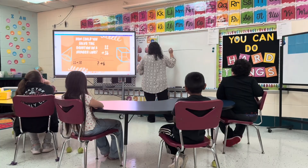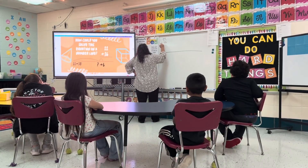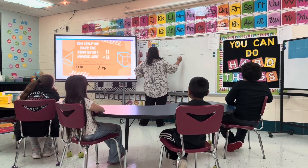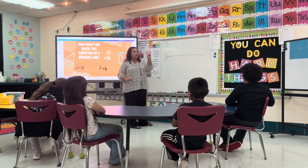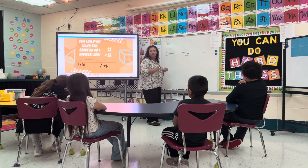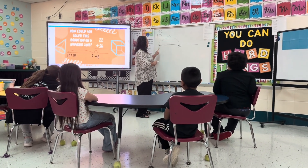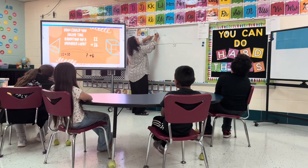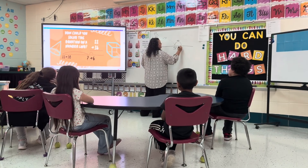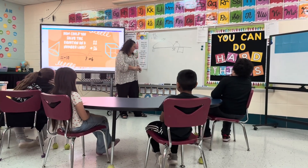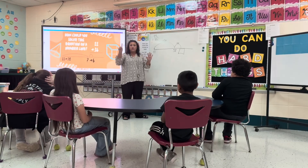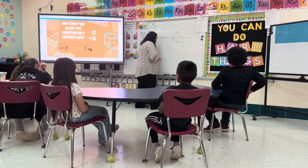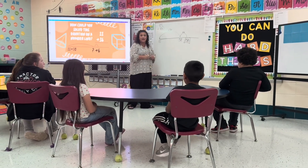So if we have an open number line and we know we have 22 plus 36, we can start with 22 and add 30 by counting by 10's: 22, 32, 42, 52. Then how many more do we have to add? We did 22 plus 30 — what did we not include? 6. So we have to add 6 more. 52 is our larger number and we count 6 more: 53, 54, 55, 56, 57, 58. Is that the same answer we got last time? Yes!